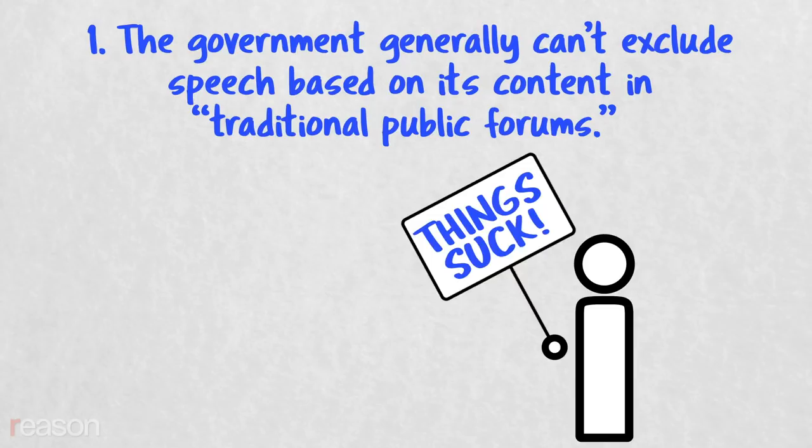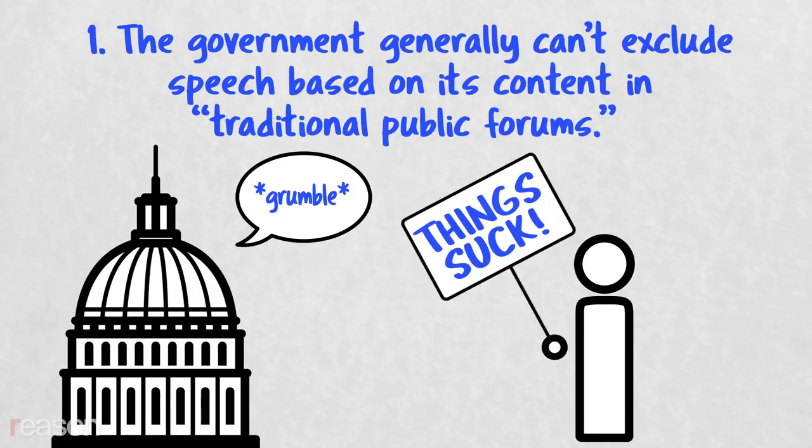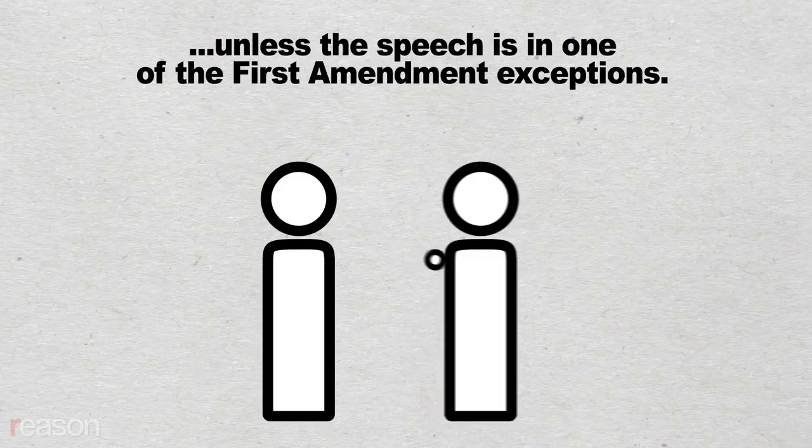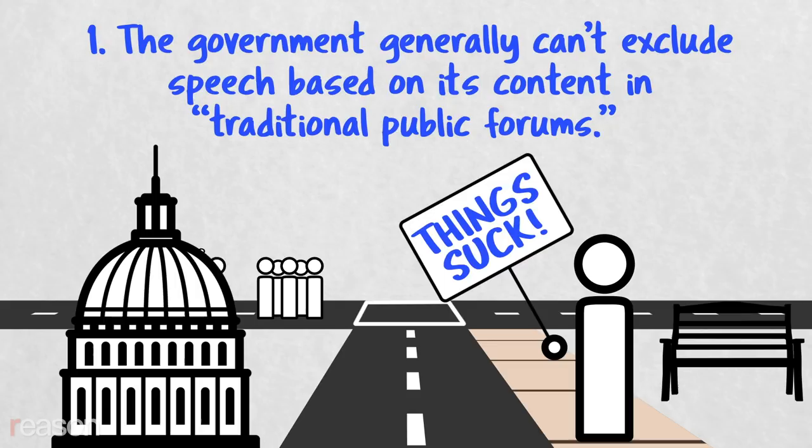Rule 1. A few forms of government property are treated as so-called traditional public forums. There, the government generally can't exclude speech based on its content. The classic examples are sidewalks and parks, as well as streets used for parades. Unless speech falls within one of the narrow First Amendment exceptions, such as true threats of crime or face-to-face insults that tend to provoke a fight, the government can't restrict it.